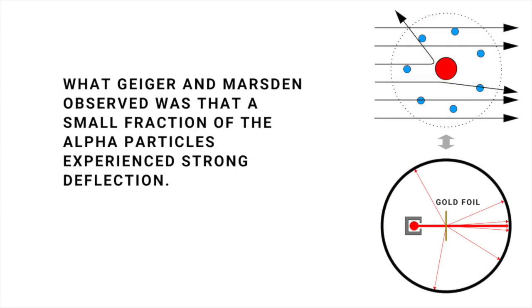What Geiger and Marsden actually found was stunning. Most of the alpha particles did indeed travel straight through the foil with little or no deviation, but a small fraction, about 1 in 10,000, rebounded, ending up on the same side of the foil as the incoming beam. A few were returned almost along the same tracks as they went in.